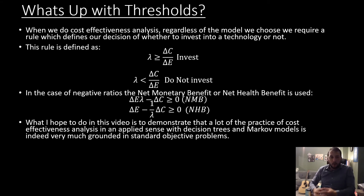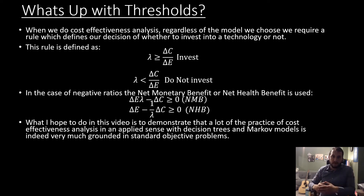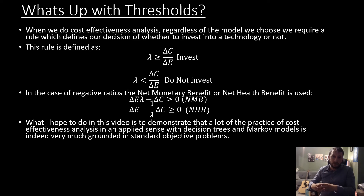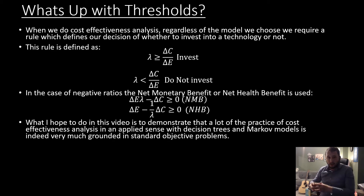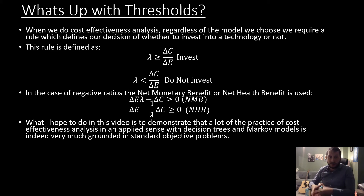So when we do cost-effectiveness analysis, regardless of the model, we need to choose what rule defines our decision of whether to invest in a technology or not. This rule in an applied setting is usually defined as lambda, which must be greater than or equal to the incremental cost-effectiveness ratio, where lambda is a constant. In the case where we have negative ratios, the net monetary benefit or net health benefit is going to be used instead, which is defined by these two equations here.